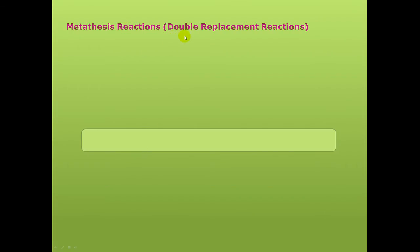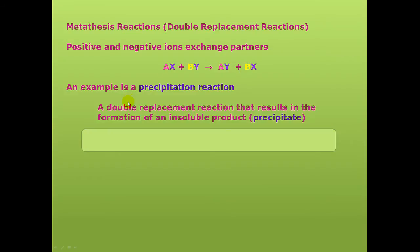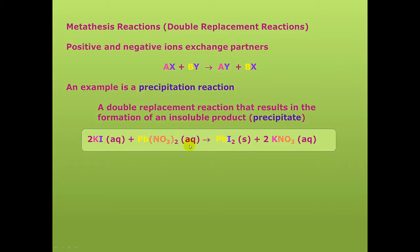The first type of reaction we're going to talk about is a double replacement reaction, or metathesis reaction. Basically what you have is an exchange of positive and negative ions: AX plus BY — note that in the products, B has been replaced by A and A has been replaced by B. One example of a metathesis reaction would be a precipitation reaction. Here we have potassium iodide and lead nitrate, which react to form solid lead iodide — which is a bright yellow — and potassium nitrate.